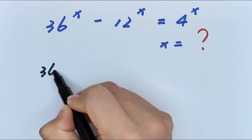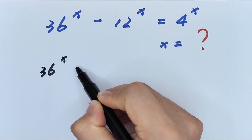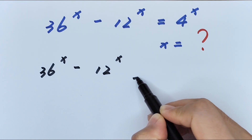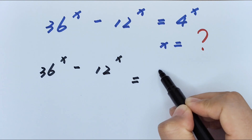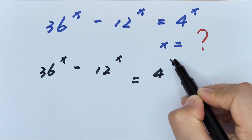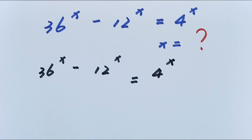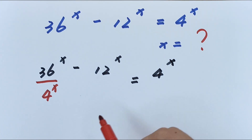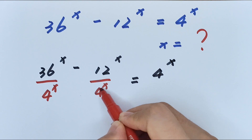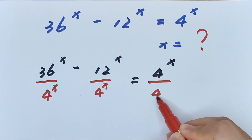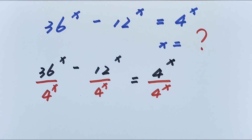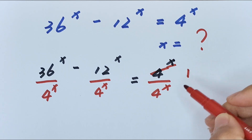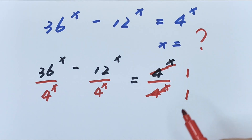13·6 to the power of x minus 12 to the power of x equals 4 to the power of x. We divide both sides by 4 to the power of x — divided by 4 to the power of x — so here the right side becomes 1.